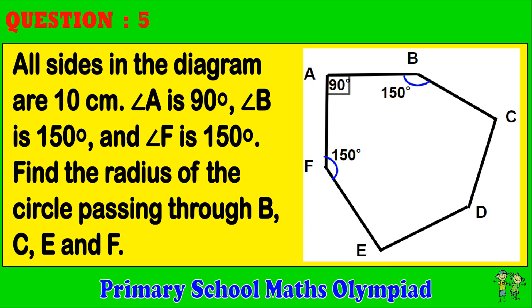Question 5: All sides in the diagram are 10 centimeters. Angle A is 90 degrees, angle B is 150 degrees, and angle F is 150 degrees. Find the radius of the circle passing through B, C, E, and F.